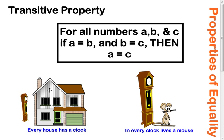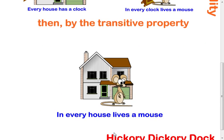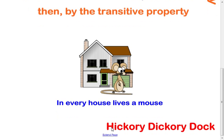Then you get to the transitive property. Now you're looking at three different things. Here we have A equal to B, and then you get B equal to C. Well, if that's the case, then you're going to know that the first and the last will also be equal in A equal to C. A little example of this, every house has a clock, and then in every clock lives a mouse. So therefore, every house lives a mouse. Hickory dickory dock.